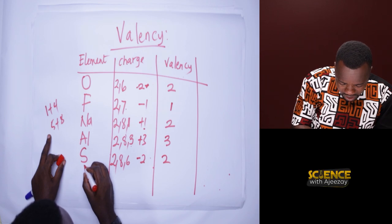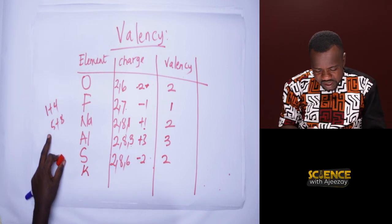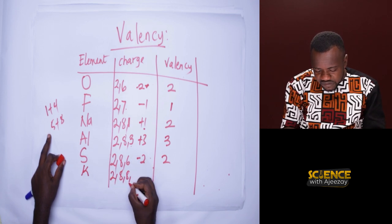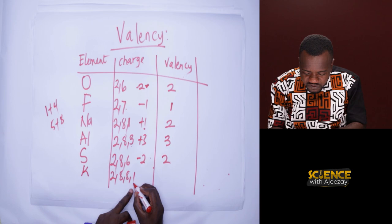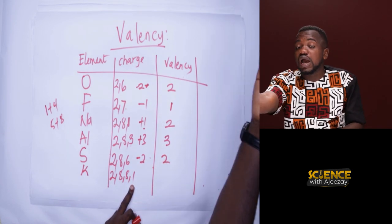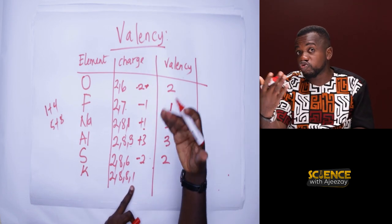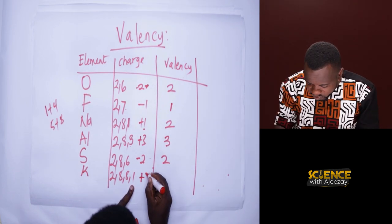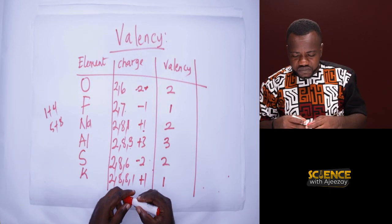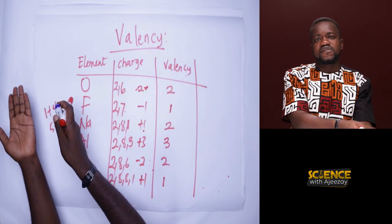Let's take potassium (K), which is element 19. Its configuration is 2, 8, 8, 1. The single outer electron makes potassium unstable, so potassium will give it out and become positive — the charge is plus one. The valency is also one. This is how to calculate valency from the charge.